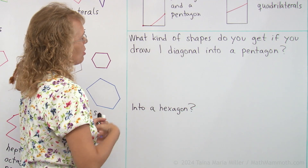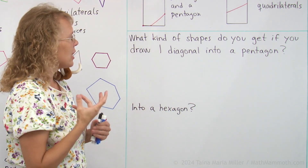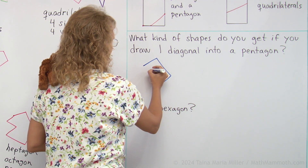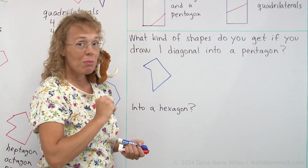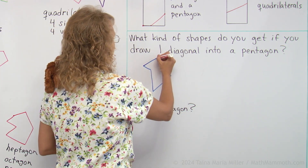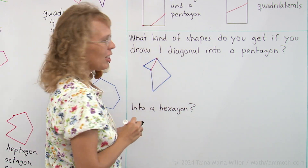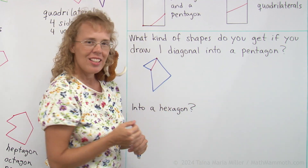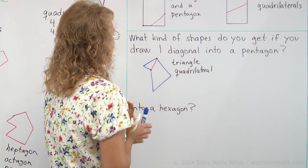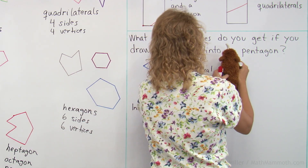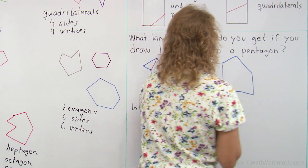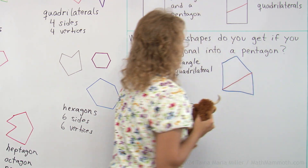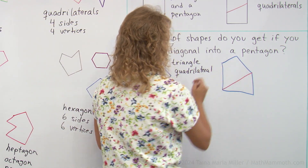What kind of shapes do you get if you draw one diagonal into a pentagon? A diagonal is a line from corner to corner. If I draw a pentagon and then draw a line from one corner to another corner — from one vertex to another vertex — what do we get? Well, here's a triangle and here's a quadrilateral. Are there any other possibilities? Mathi wants to draw — draw me another pentagon so we can check. And now drawing a diagonal from corner to corner — we get a triangle and a quadrilateral again.